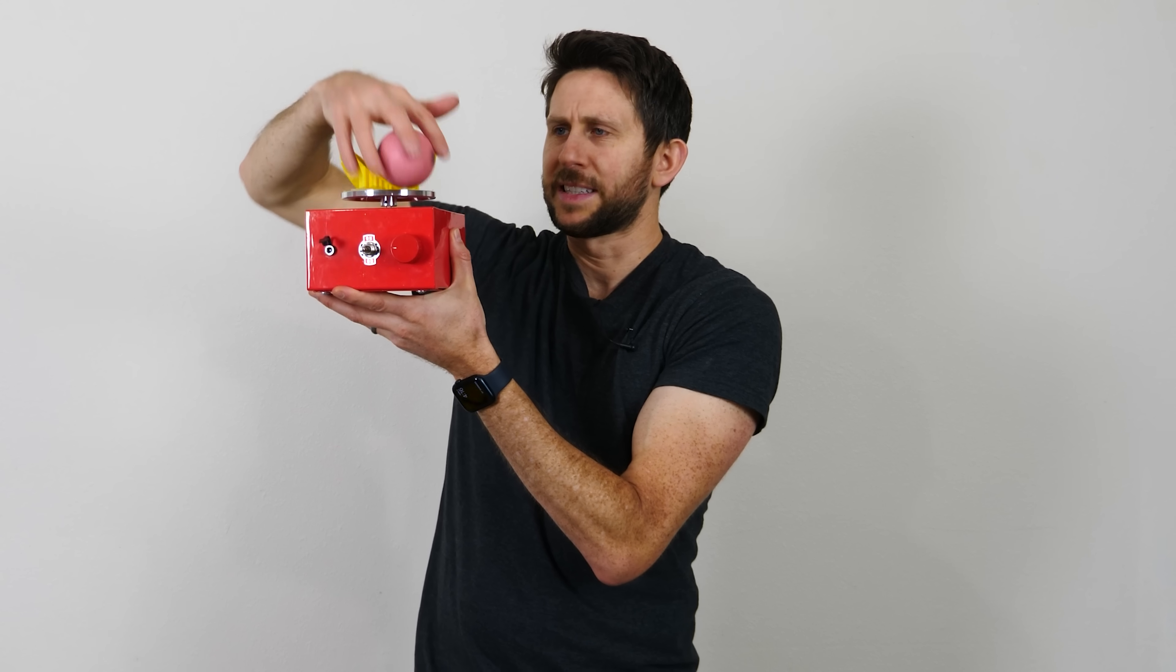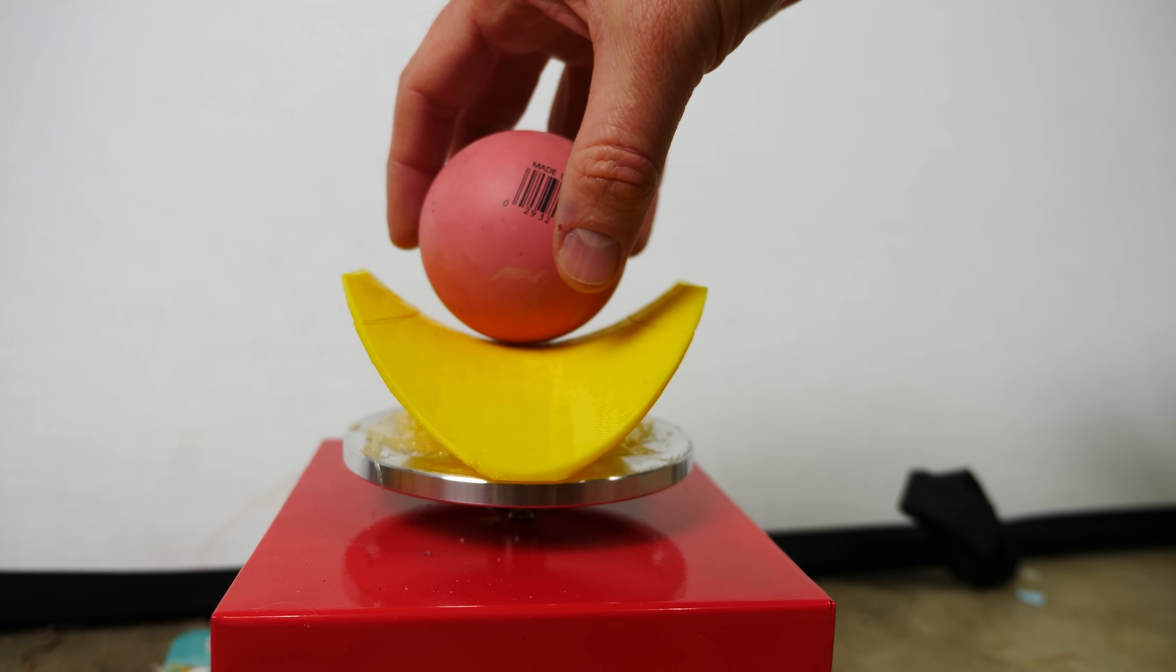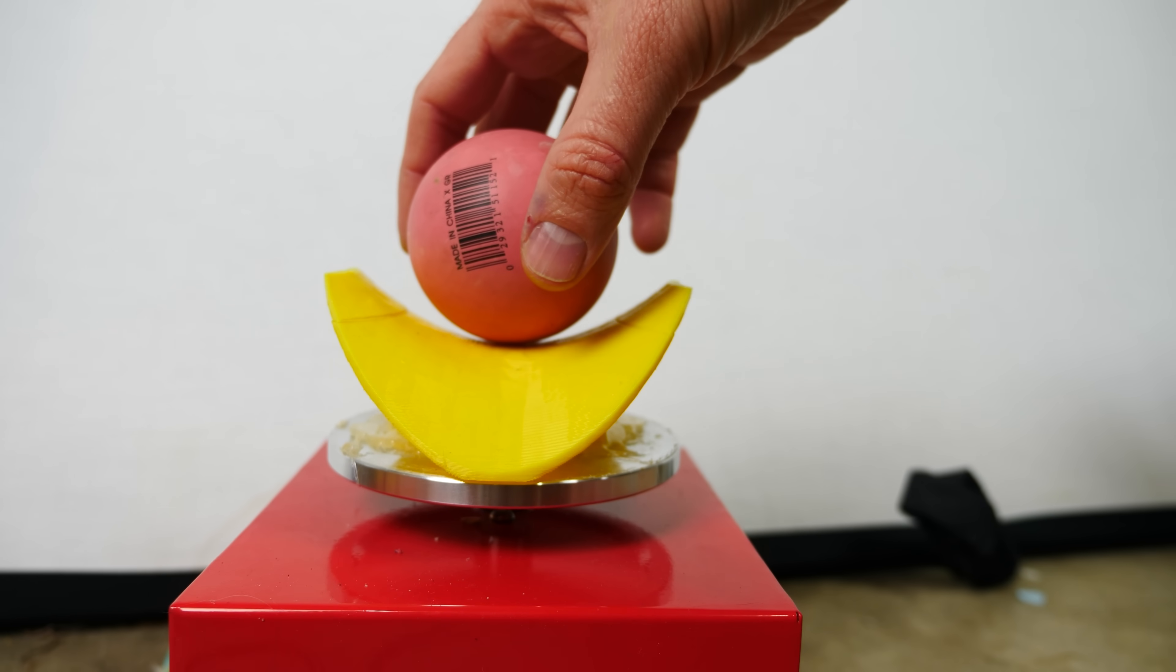Then this is just one of these Spalding super bounce balls. Now regularly when you put the ball on the saddle it rolls off. There's no stable point that it can stay in the middle here. You can see that there's no stable point. I can't get it to balance in the middle. Wherever I put it it falls off.